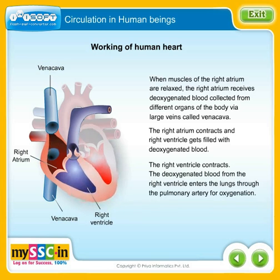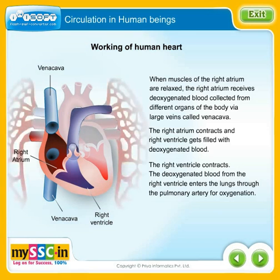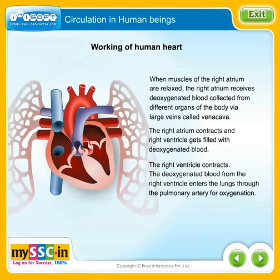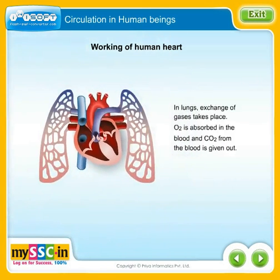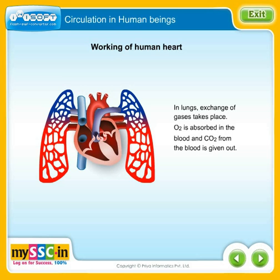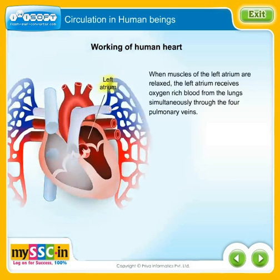The right ventricle contracts and the deoxygenated blood from the right ventricle enters the lungs through the pulmonary artery for oxygenation. In the lungs, exchange of gases takes place — the deoxygenated blood gets converted to oxygenated blood. Oxygen is absorbed into the blood and carbon dioxide from the blood is given out.